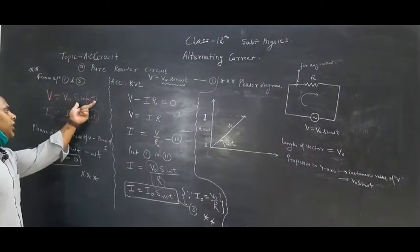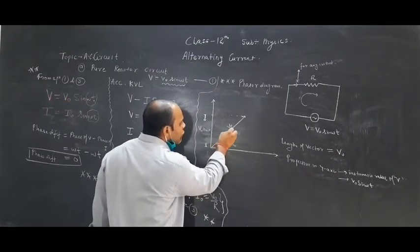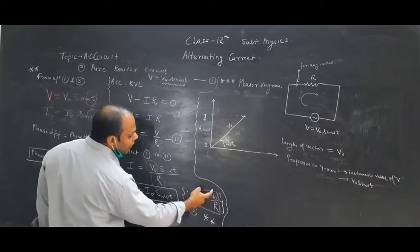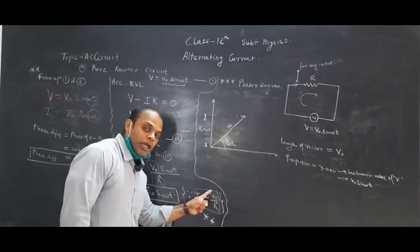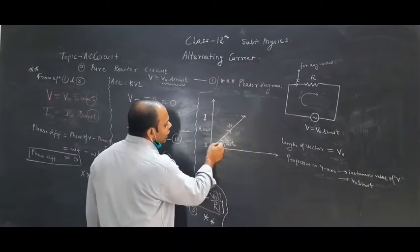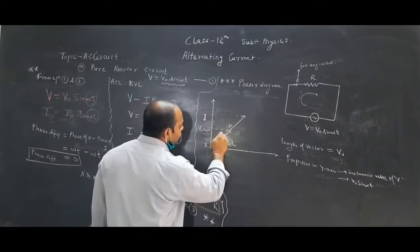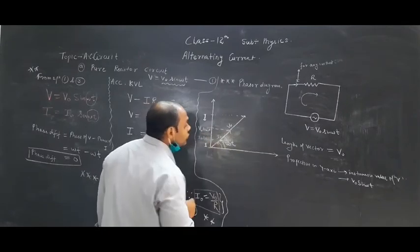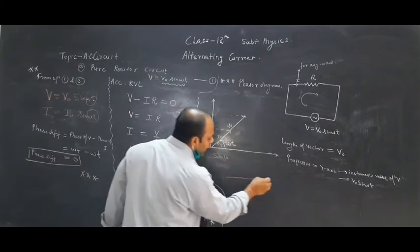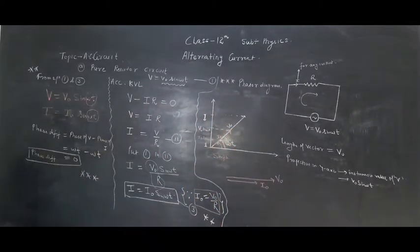Since the phase of V and I are the same (phase difference = 0), we draw the I vector in the same direction as V. But the length of I₀ is smaller than V₀ because I₀ = V₀/R — it is divided. So V₀ and I₀ are in the same direction on the phasor diagram.